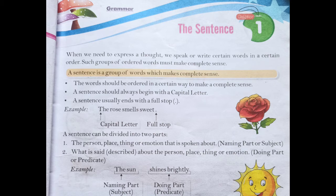A sentence always begins with a capital letter, and a sentence usually ends with a full stop. It means that when you start your sentence the first letter should be capital, and when you complete your sentence you should put a full stop to show that your sentence is completed.